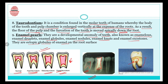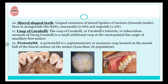Next comes shovel-shaped teeth — a lingual extension of the lateral borders of incisors. This is seen in Mongoloids in 80 to 85 percent of cases, in Caucasians in 2 to 6 percent of cases, and in Negroids in 1 to 2 percent of cases. In the picture you can see the shovel shape on the lateral borders of the incisors.